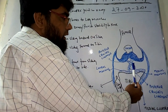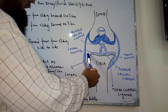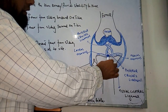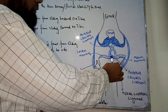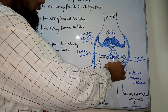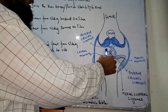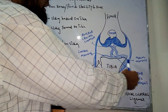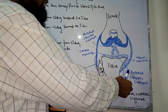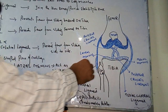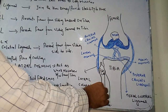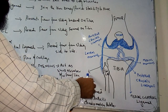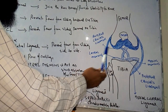Looking closely at the structure of the knee, here is the lateral meniscus and here is the medial meniscus. If someone twists their knee, the meniscus can be torn. There are also two more important structures: this is called the anterior cruciate ligament, and posteriorly there is the posterior cruciate ligament. Then there are two more important ligaments — the medial collateral ligament and the lateral collateral ligament, located laterally in the human body.